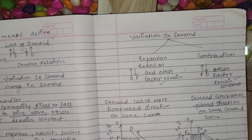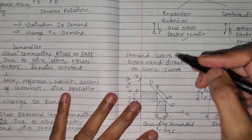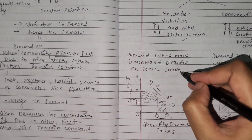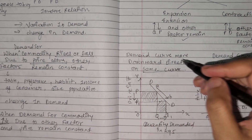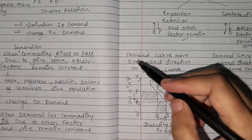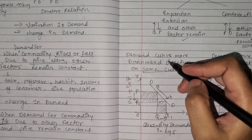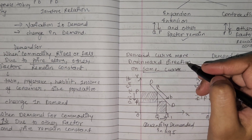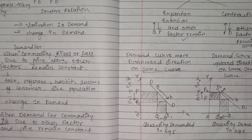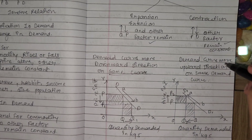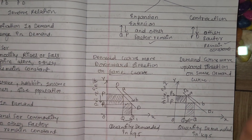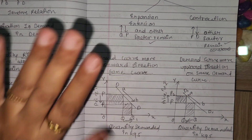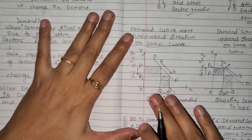The demand curve moves in a downward direction on the same curve — please remember this. So expansion will be a downward direction movement and contraction will be an upward direction movement on the same demand curve. Let us understand this with the help of a diagram.